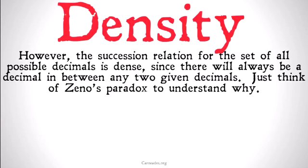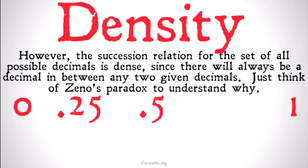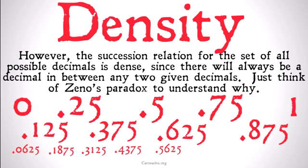However, the succession relation for the set of all possible decimals is going to be dense, since there will always be a decimal between any two other given decimals. Just think of Zeno's paradox — you can always continuously cut a distance in half. Between 0 and 1 there's 0.5; between 0 and 0.5 there's 0.25; between 0.5 and 1 there's 0.75, and so on. Basically, you're always going to be able to subdivide our set of all decimals. So the set of all decimals is dense, whereas the set of all integers was not.